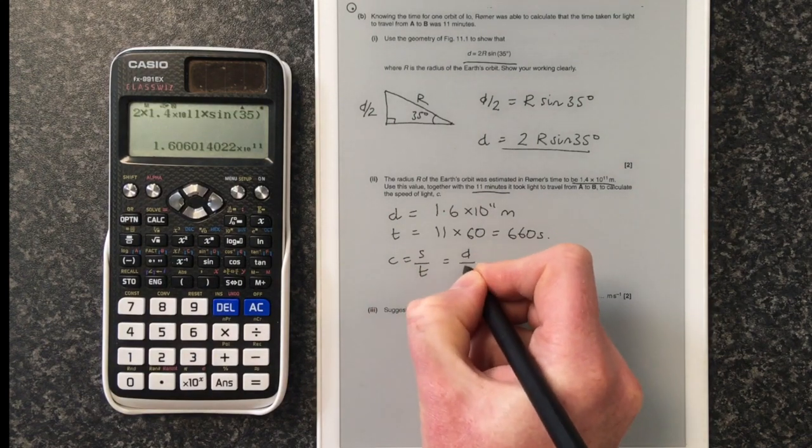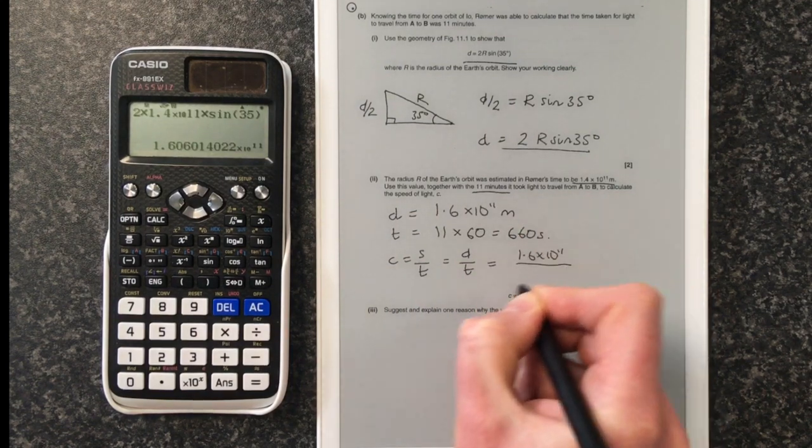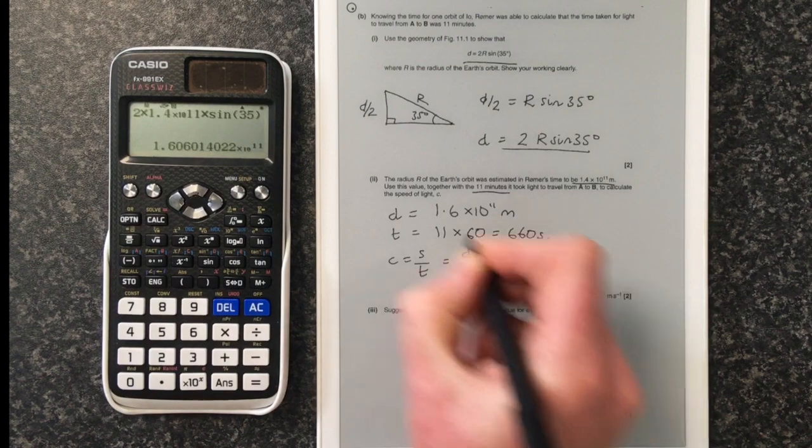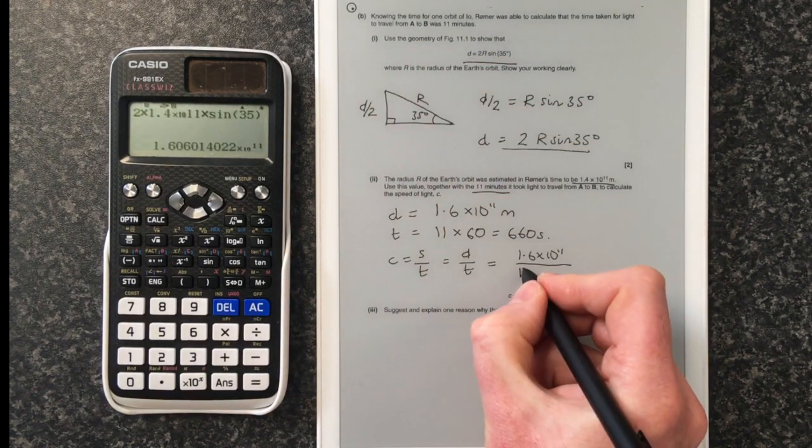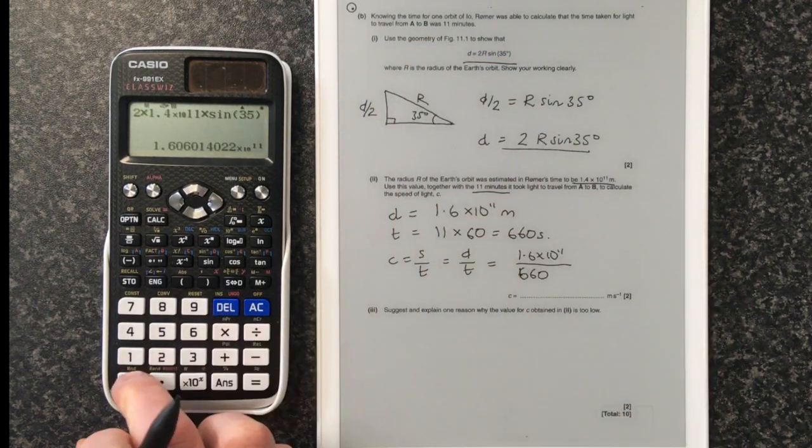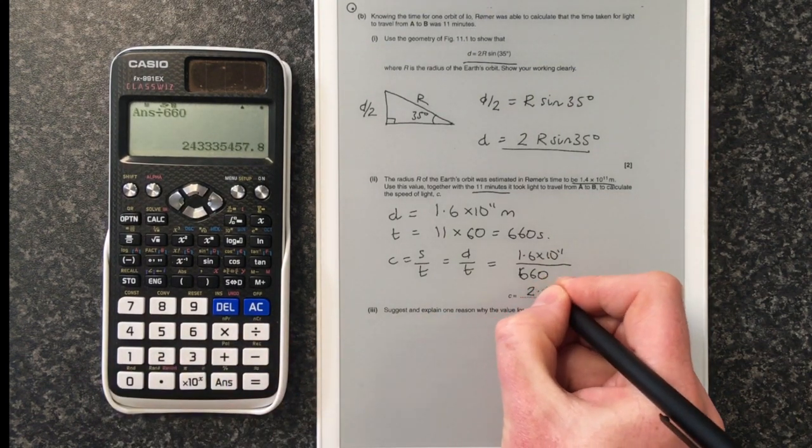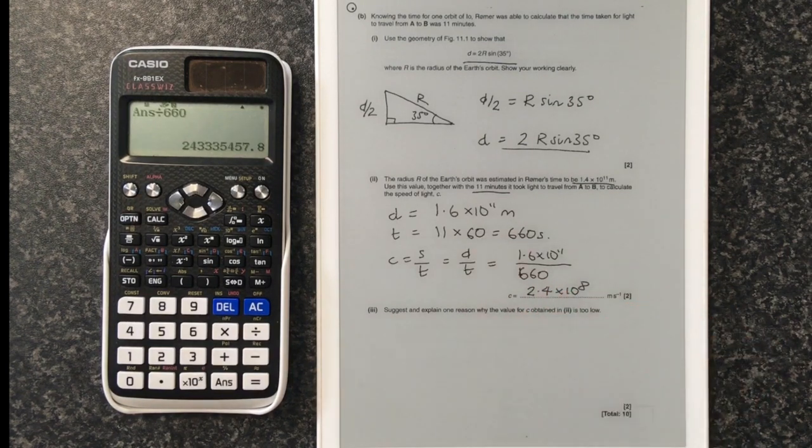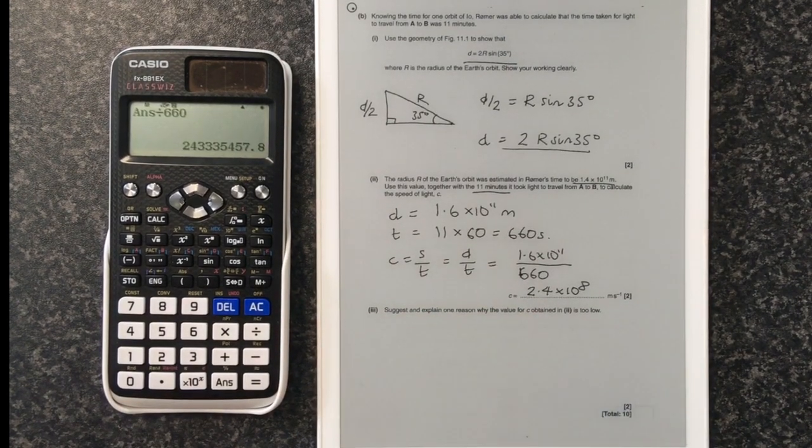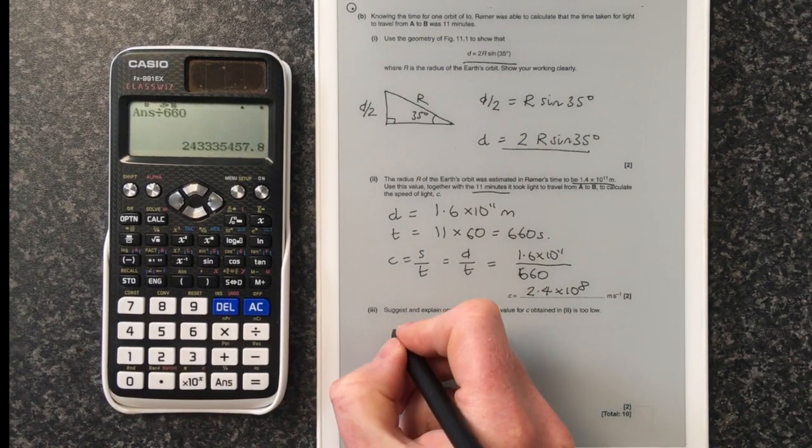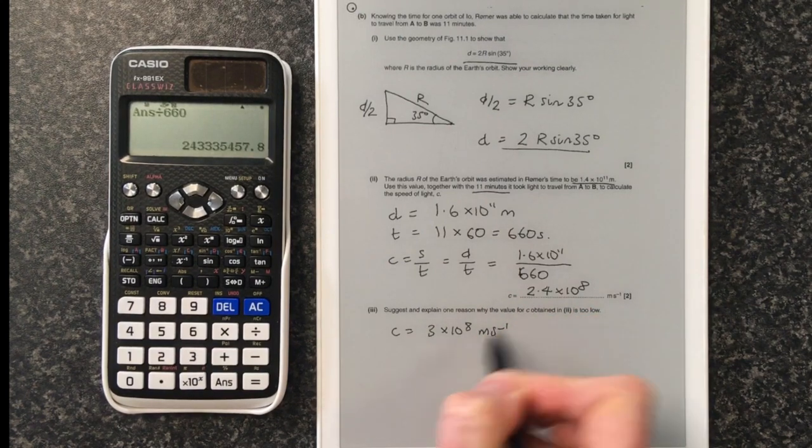Our distance is D and our time is T. So our distance is 1.6 times 10 to the 11 and our time is 660. That gives me an answer of 2.4 times 10 to the 8 meters per second. Now, we know that C isn't 2.4 times 10 to the 8 meters per second. We've done a more accurate calculation more recently. So we know that C actually equals 3 times 10 to the 8 meters per second. So that value is definitely lower.